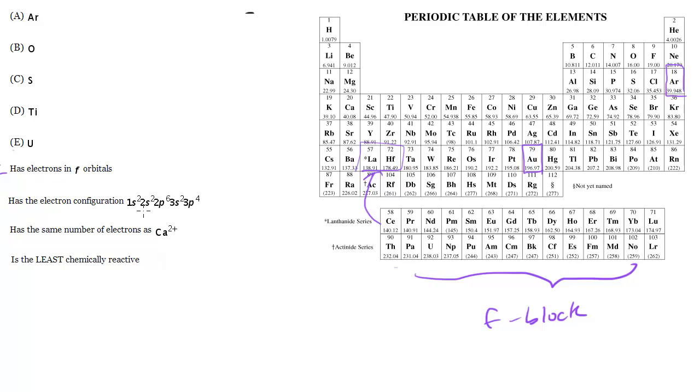How does the electron configuration 1s2 2s2 2p6 3s2 3p4? Okay, one way to do it is just count the number of electrons and match it up to the atomic number. 2, 4, 10, 12, 16. That's atomic number 16 is S, so the answer is C. That's one way.